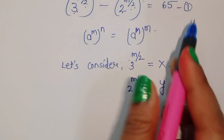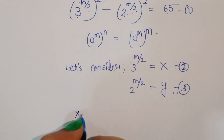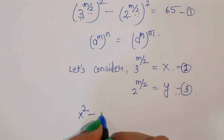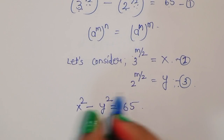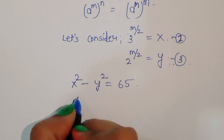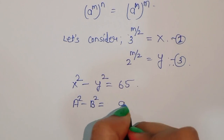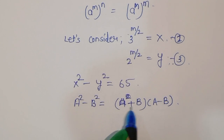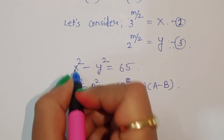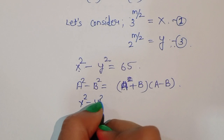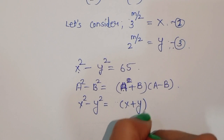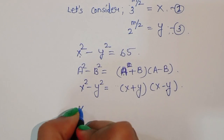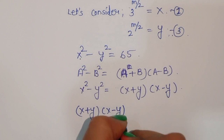Now, by using equations 2 and 3 in equation 1, we will get: 3 power (m by 2) that is x squared, minus 2 power (m by 2) that is y squared, is equal to 65. This is x squared minus y squared. We know the formula: a squared minus b squared is equal to a plus b times a minus b. So using this formula here, we get x squared minus y squared equals x plus y times x minus y, and x plus y times x minus y is equal to 65.